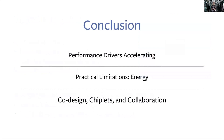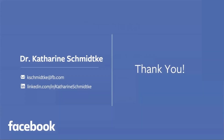In conclusion, there are a number of performance drivers that are each accelerating, and we're in catch-up mode. Balanced with that are the practical limitations around energy consumption and the need to be more efficient. As solutions, I talked about co-design as a way to improve performance through the hardware-software feedback loop, chiplets as a way to get flexibility at the chip level, and collaboration as a way to build and share together and create an ecosystem that supports many different businesses. Thank you very much for your attention.